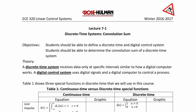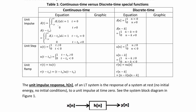Table 1 shows three special functions in discrete time that we will use in this course. The first one is a unit impulse or an impulse function in continuous time. Delta of t equals the integral from negative mu to mu of delta of lambda d lambda, which equals 1 at t equals 0, and 0 when t is not equal to 0. For continuous time, the area under the curve is 1 once you integrate over the impulse and it's 0 otherwise.